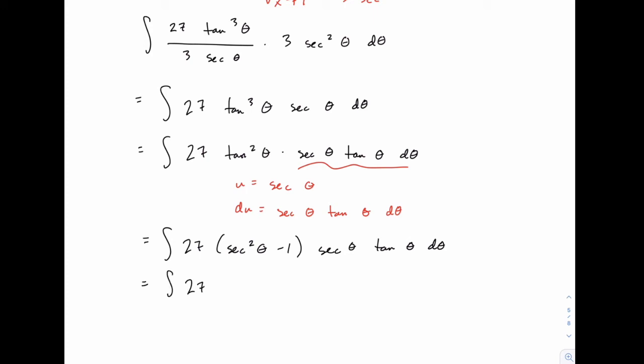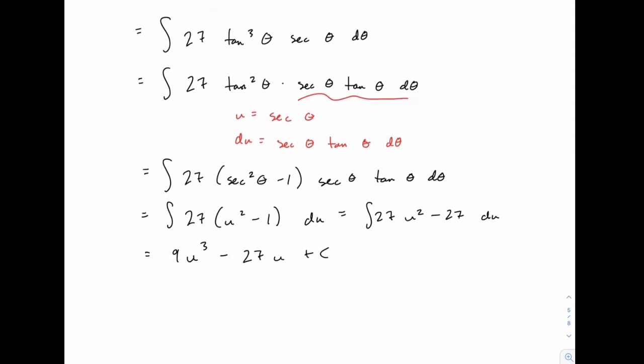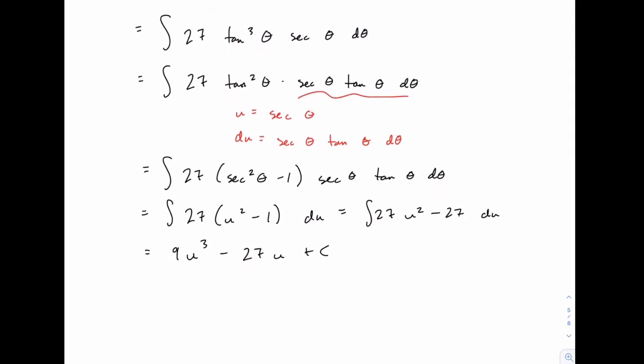So we have the integral of 27 u squared minus 1 du, and of course that's just 27 u squared minus 27. When we integrate we get 27 over 3 or 9 u to the third minus 27 u, and then we can replace u having now finished the integral with secant theta again.